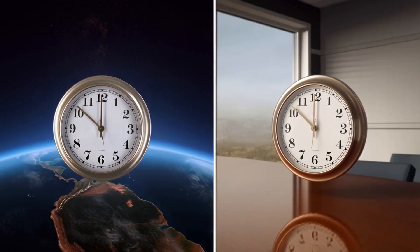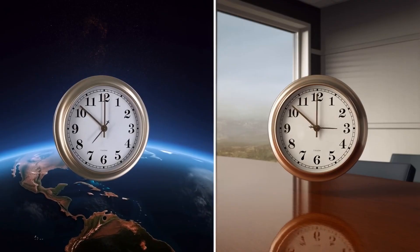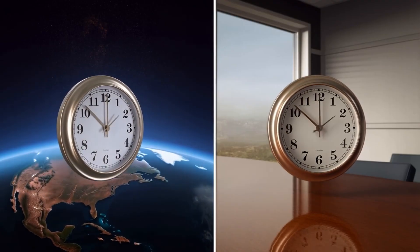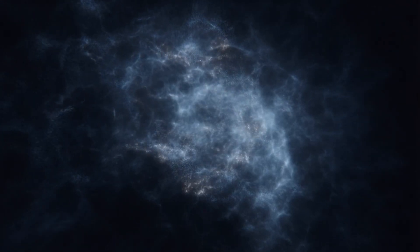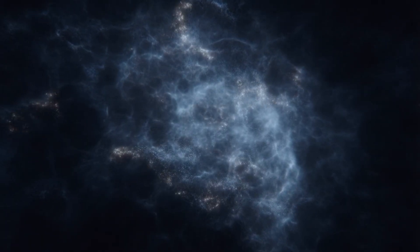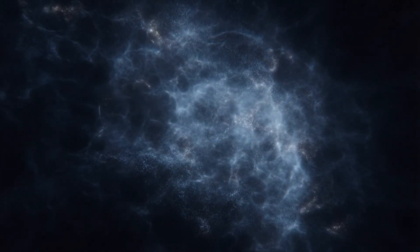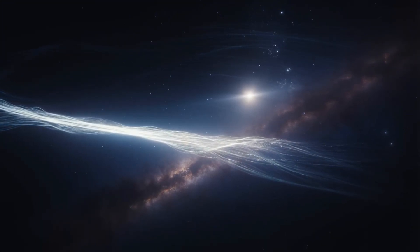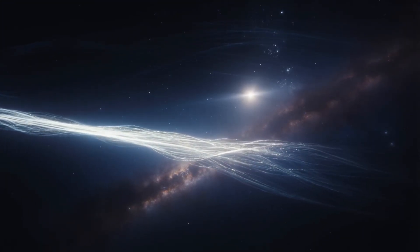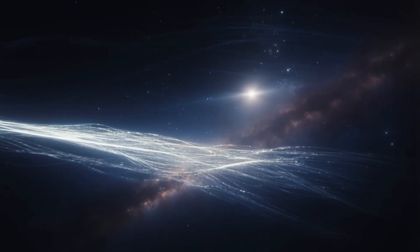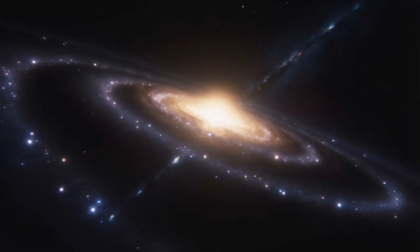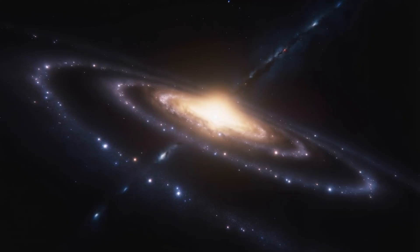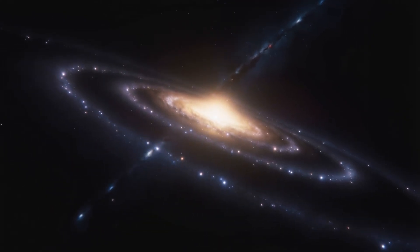As our view continues to expand, the true structure of the universe begins to reveal itself. Galaxies group together in clusters. Those clusters form filaments, cosmic threads. Together they create a web, the cosmic web, a structure stretching hundreds of millions of light years across, made not only of galaxies but of dark matter, shaping everything silently, invisibly.